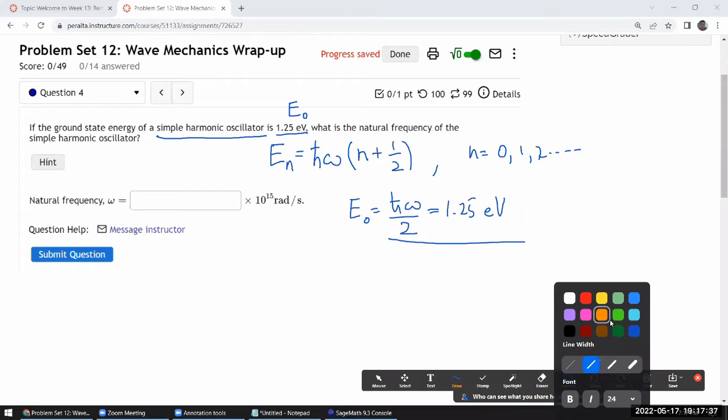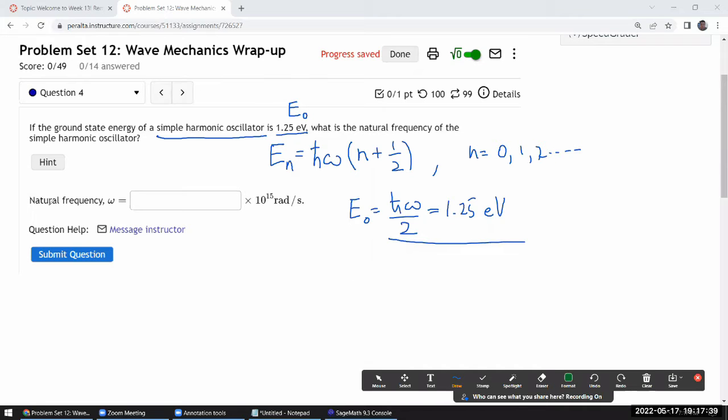And it looks like the question itself is asking for natural angular frequency. I'm looking at this unit of radians per second. So I can just leave these things as they are. I think I just need to look up what value the reduced Planck constant has.